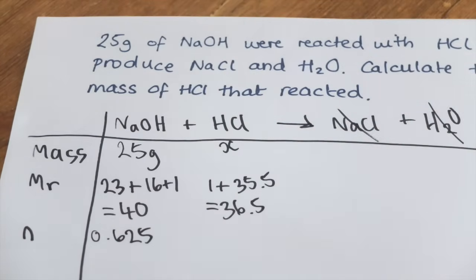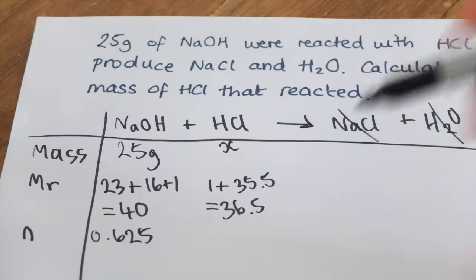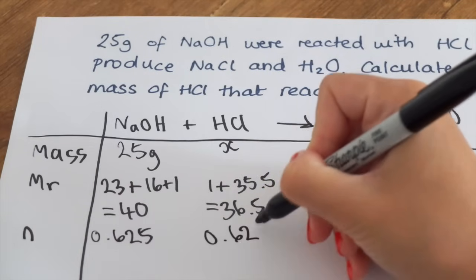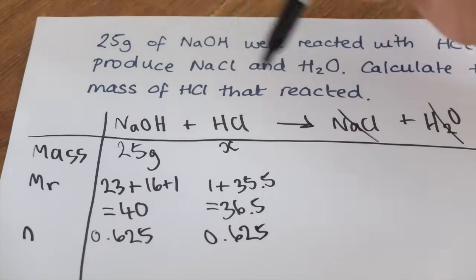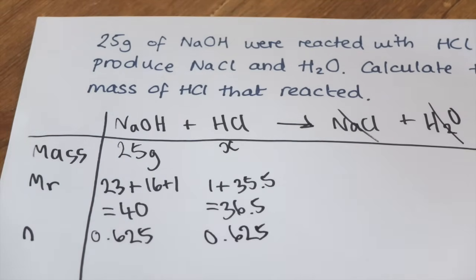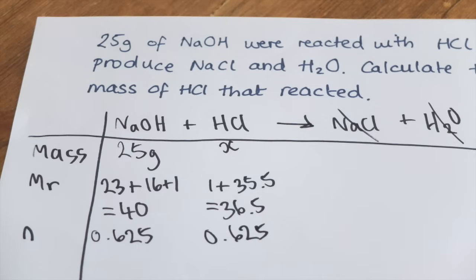Looking at the balanced equation, there are no large numbers in front of any of the values, so if we know the number of moles of sodium hydroxide then we know the number of moles of hydrochloric acid — they react in a 1:1 ratio. So we carry that number across: 0.625 moles of HCl. We now have Mr and number of moles, so we can calculate mass. Mass = Mr × moles = 0.625 × 36.5, and the answer is 22.8 grams of hydrochloric acid.